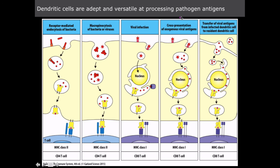Dendritic cells are adept and versatile at processing pathogens and antigens. We all know about phagocytosis, MHC class 1, MHC class 2, but I wanted to bring up the process of cross-presentation — they can present both exogenous viral antigens, and they can actually transfer viral antigens from infected dendritic cells to resident dendritic cells. This plays a huge role because there are very few viruses that can directly infect and propagate well inside dendritic cells.